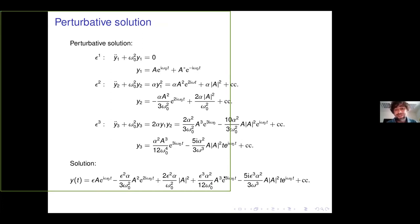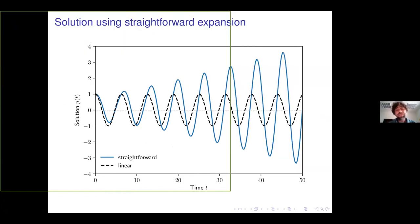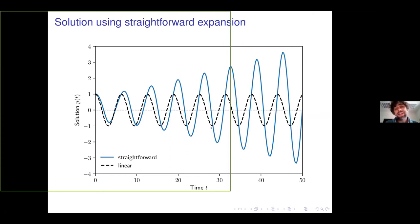Looking at the resulting solution, the black curve is the linear solution — perfectly bounded like a harmonic oscillator. The blue curve is the complete solution up to third order. This solution is somehow diverging. The question is: is this divergence real? If real, it would imply all oscillations in the universe eventually become unstable — which seems wrong. So let's look more carefully.